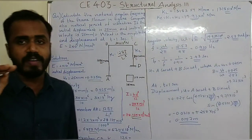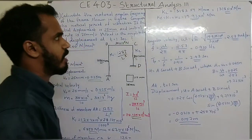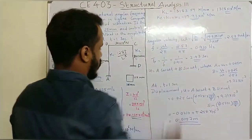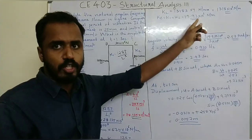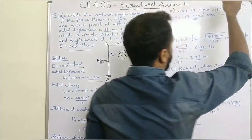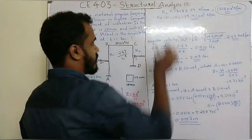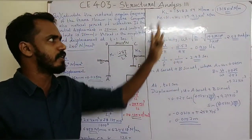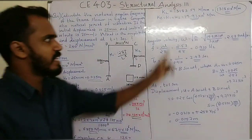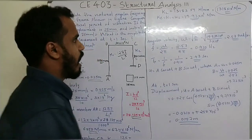K2 stiffness of member CD using 12EI by L cubed expression, where L is equal to 800mm. K2 is equal to 13183.59 N/m. K1 plus K2, the total stiffness, is equal to 19.93 into 10 raised to 6 N/m.